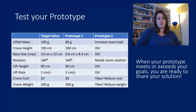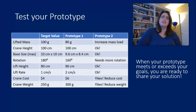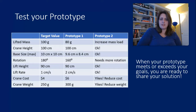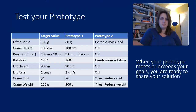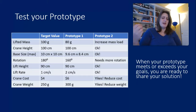Now it's time to test our prototype. This is the kind of table I have my students create whenever they're doing an engineering design style project. In the first column are all of their variables: lifted mass, crane height, maximum base size, and rotation — how much the crane has to be able to pivot.